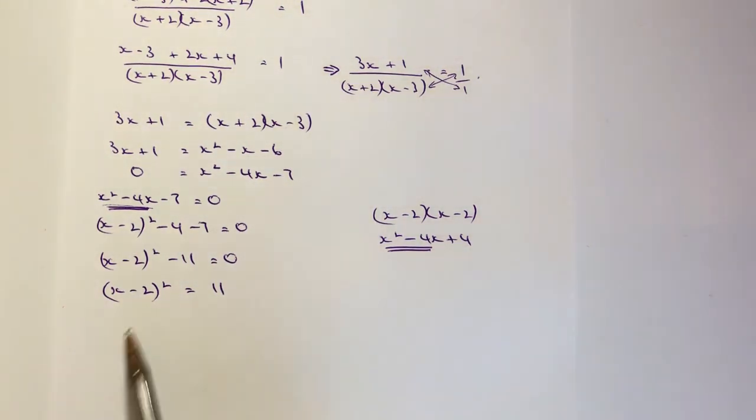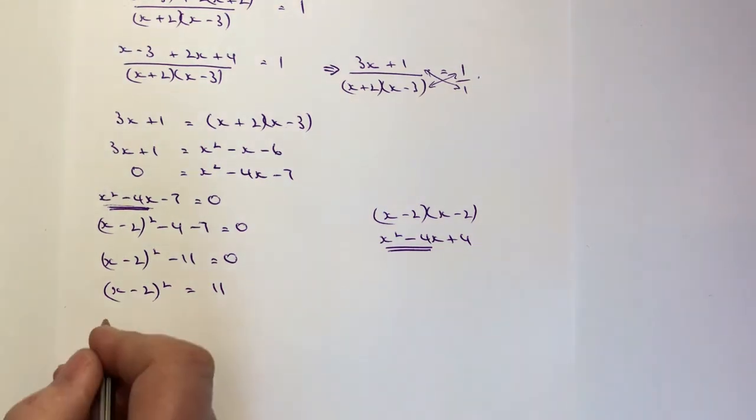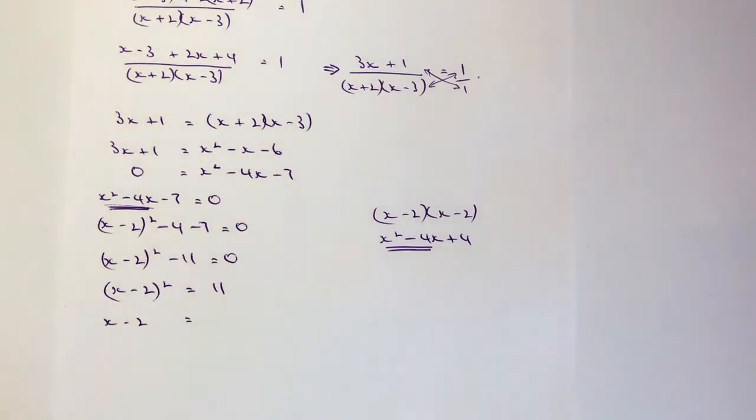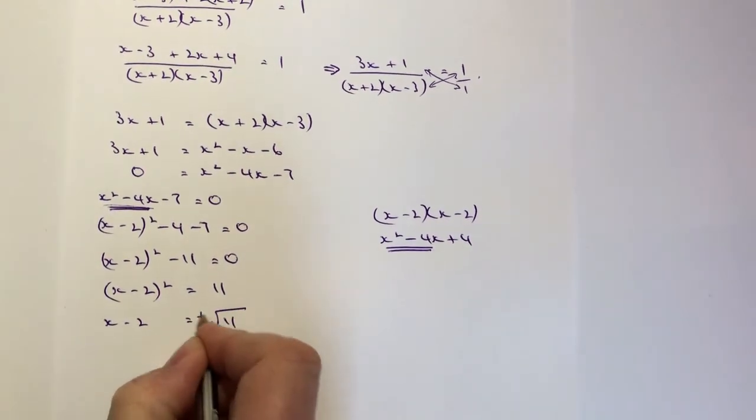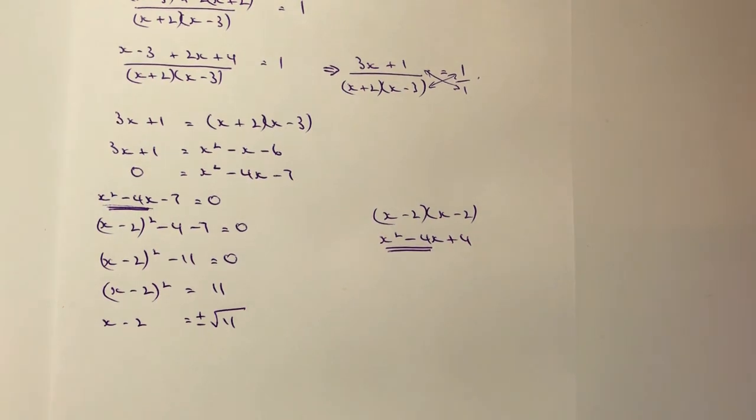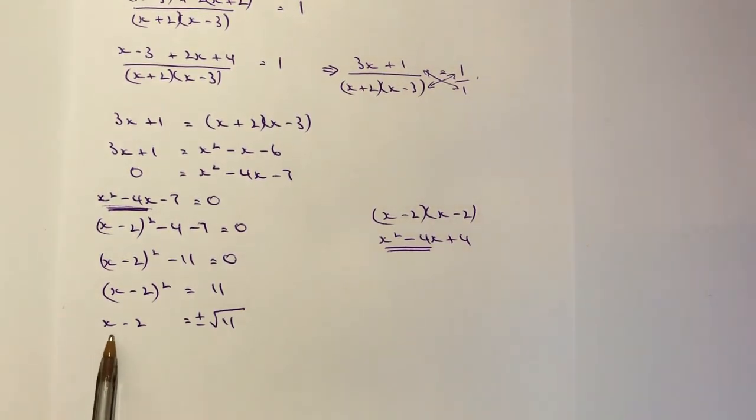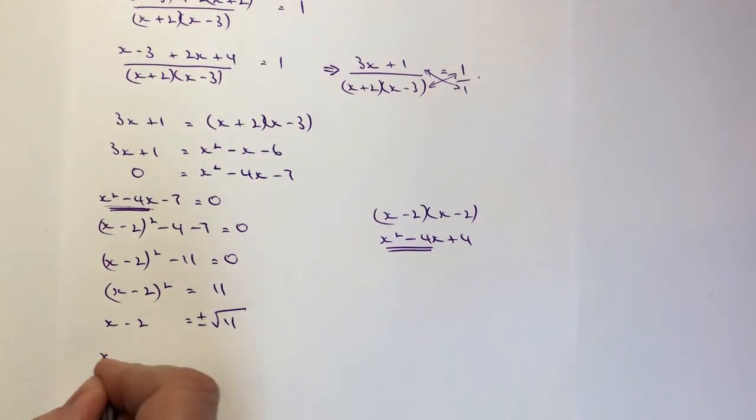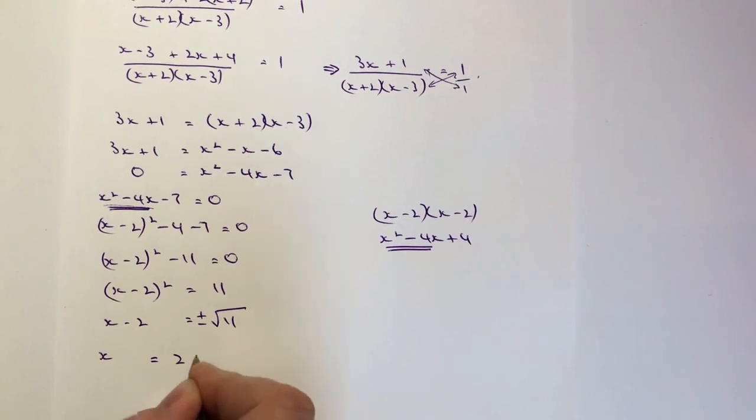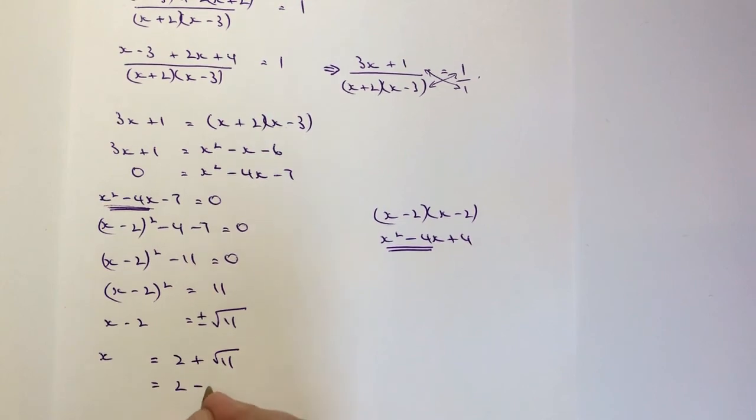So if I square root the left hand side I get x minus 2, if I square root the right hand side I get the root of 11. Now remember that's a plus or a minus because square roots can be plus or minus. Then it's a case of taking over this value of minus 2 and moving it over here so actually I can write x as equal to 2 plus the root of 11 or x is equal to 2 minus the root of 11 and that's actually my answer.